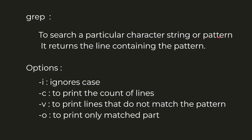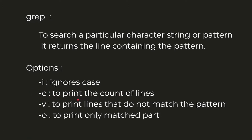The grep command is used to search a particular character string or pattern in a file or in input data. It returns all the lines that contain the pattern specified in the command. Some important options that grep can accept are: -i, -c, -v, and -o. The -i option is used to perform case-insensitive comparison, ignoring case while matching the pattern. The -c option prints only the count of lines that match the search pattern.